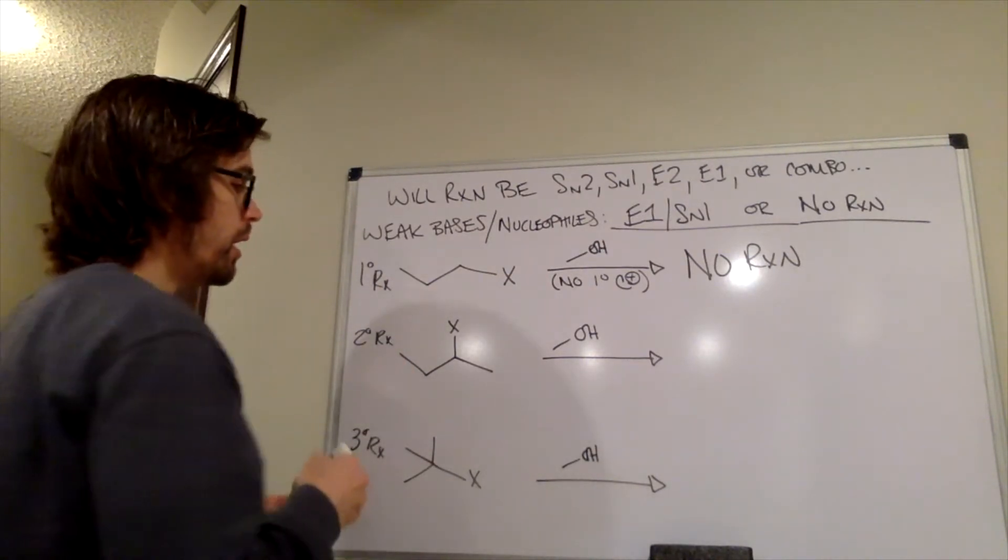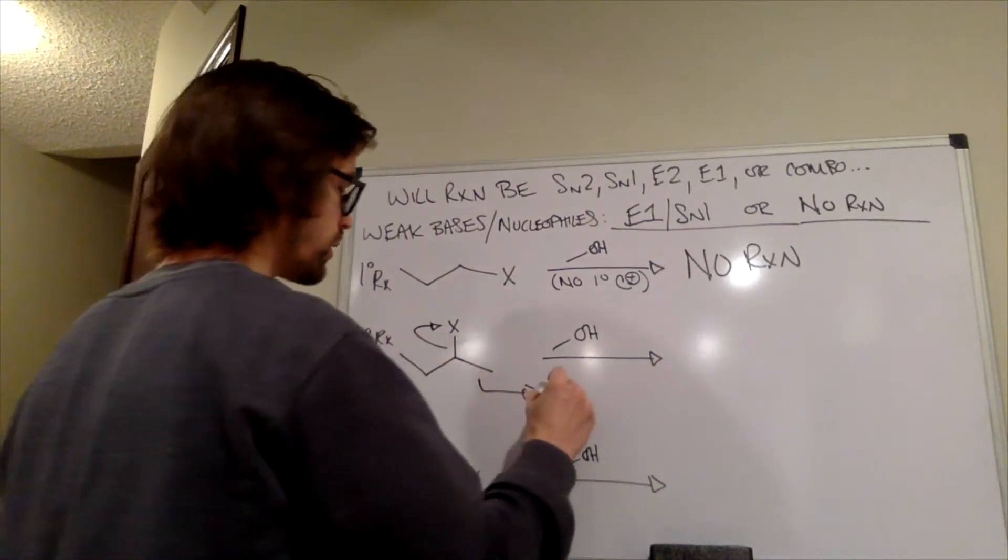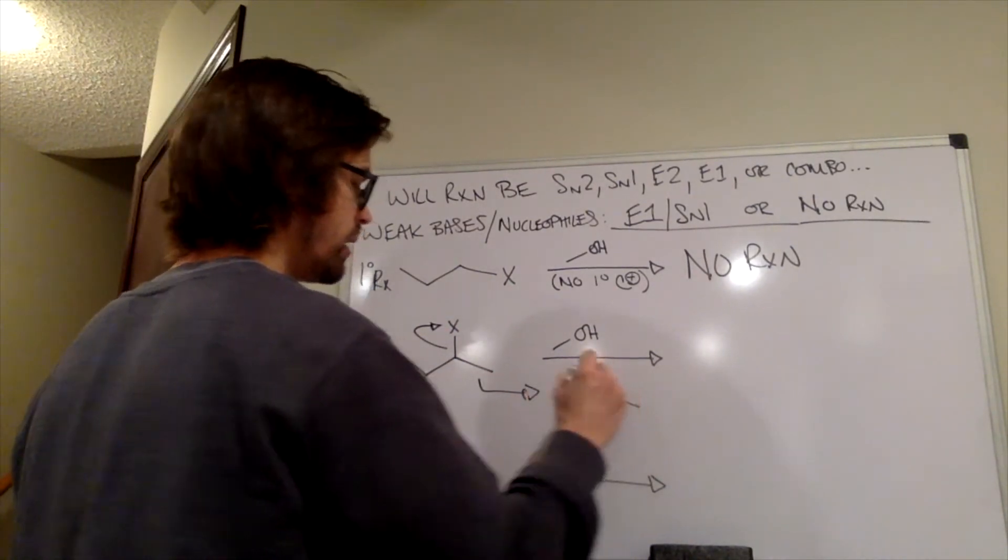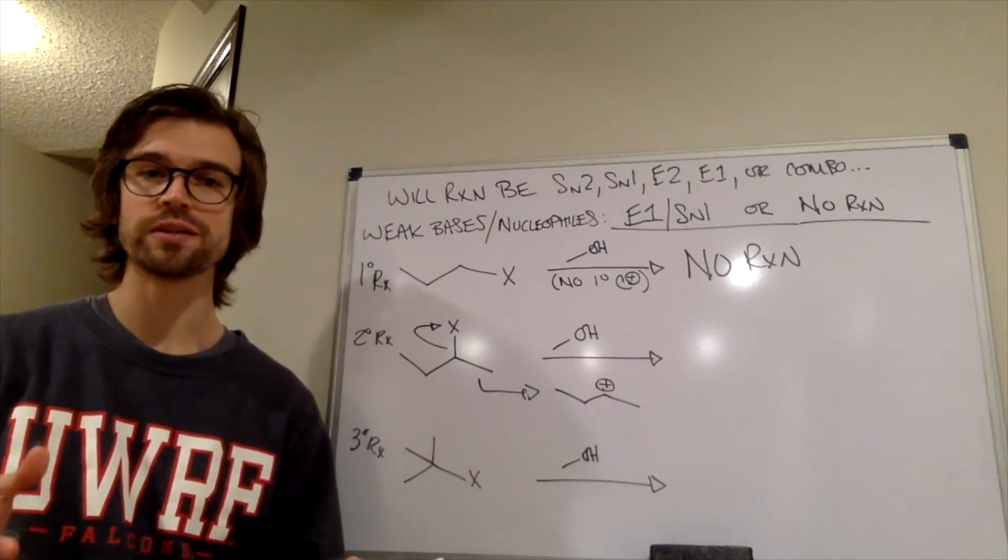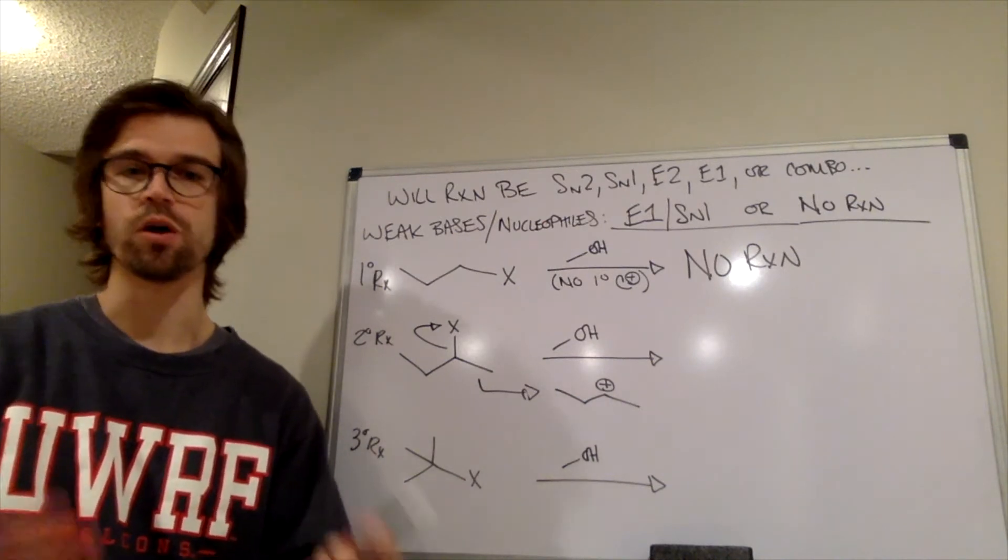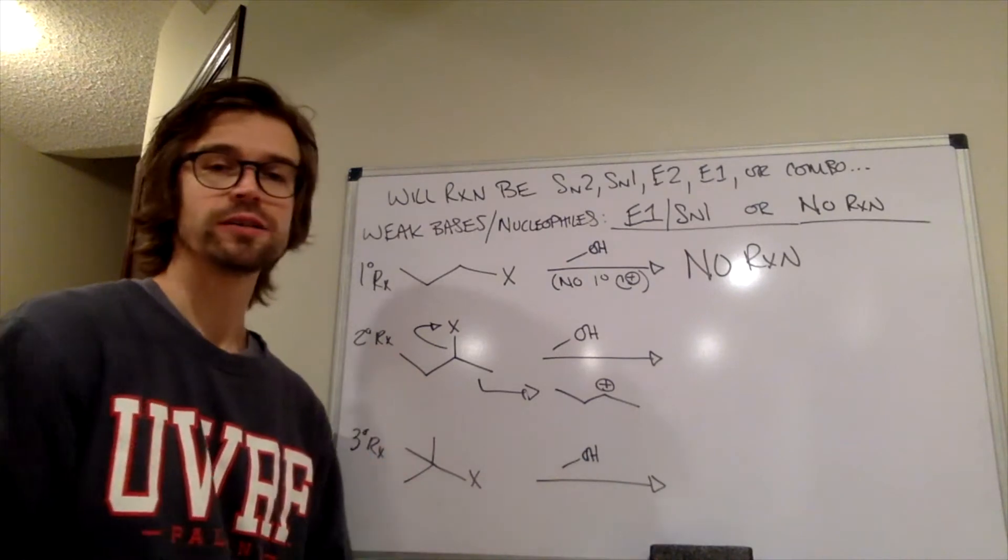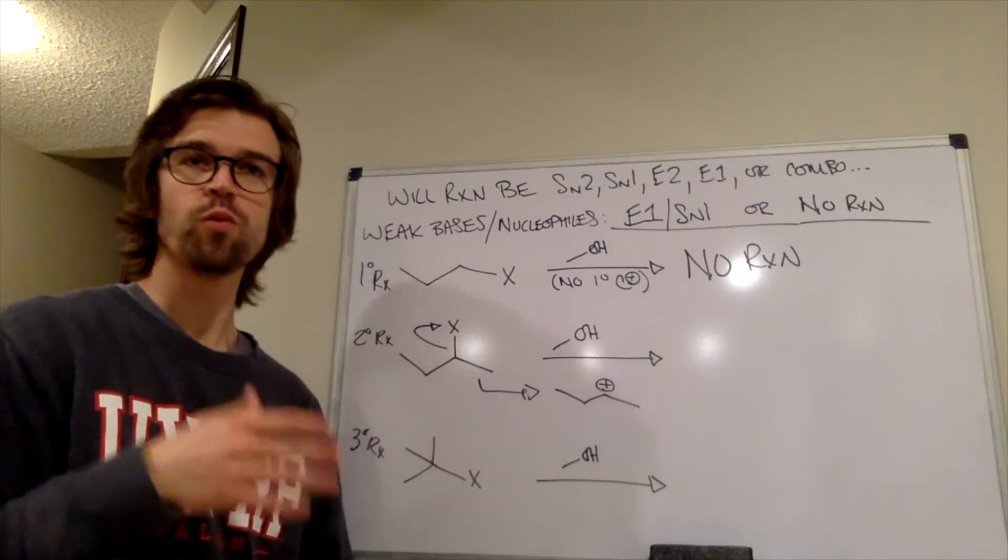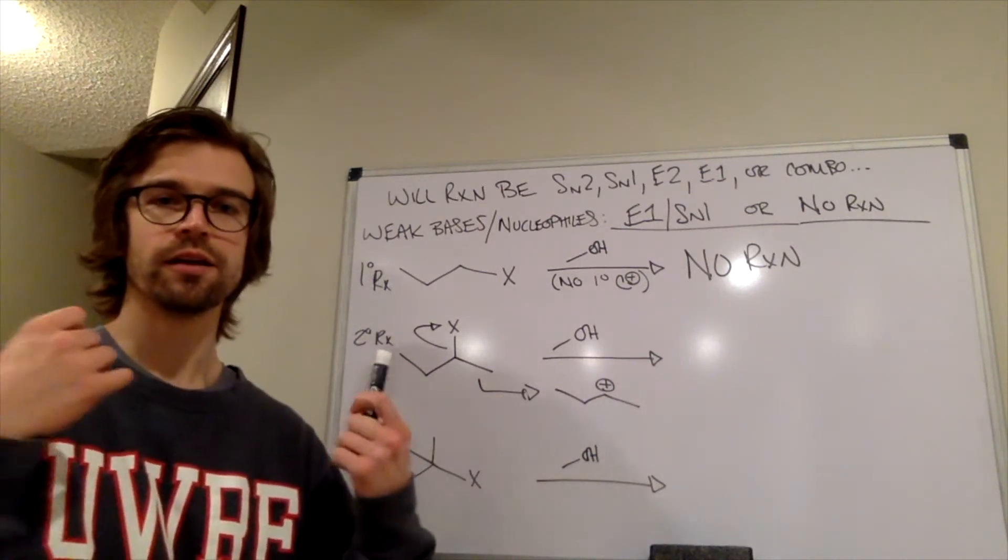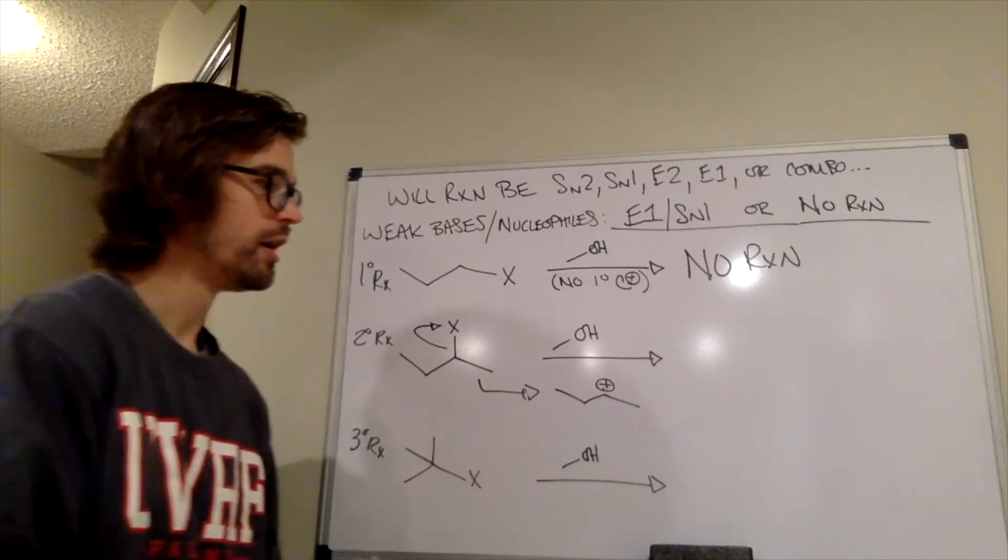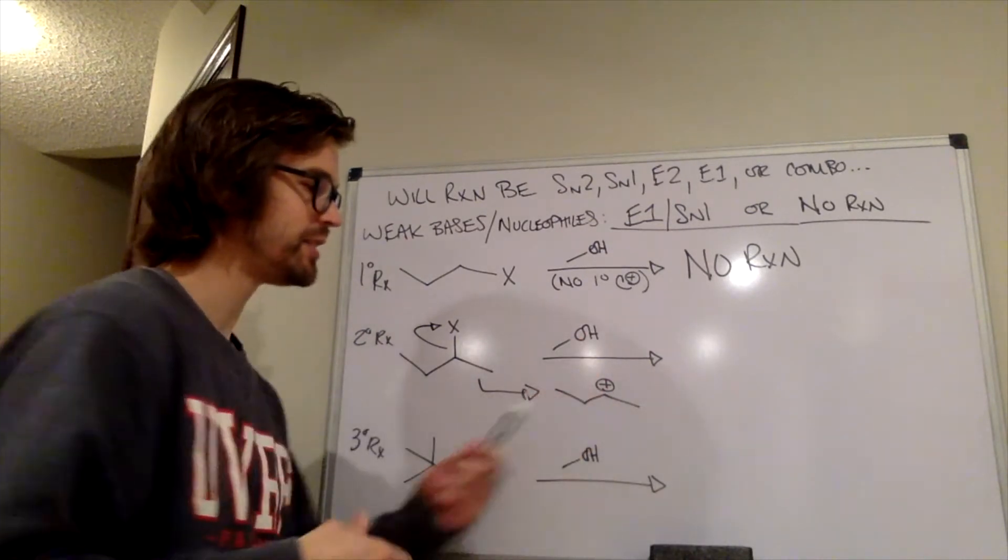Secondary carbocations can form. That means that the intermediate in this reaction would look like this. And when we have a unimolecular pathway, it's always going to be a mixture of SN1 and E1. So one thing I said before is that E1, SN1, because they happen simultaneously, they're not very good at making one single product. So let's kind of look into that a little bit. Well,